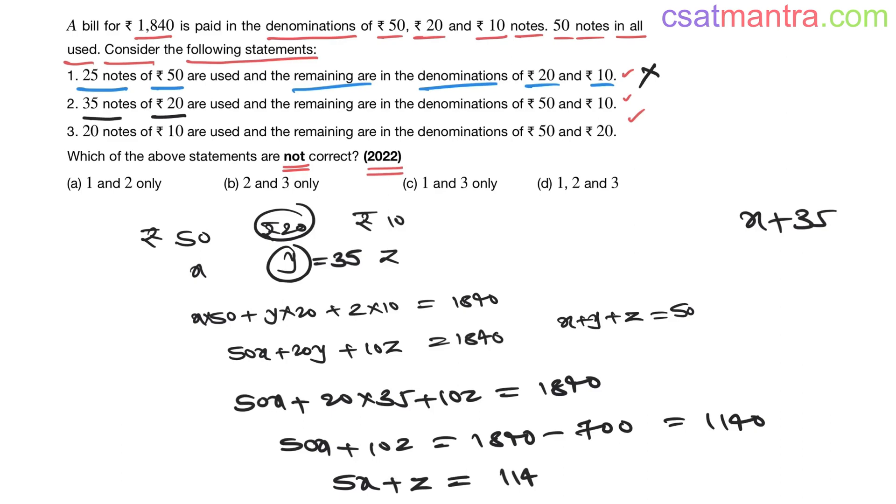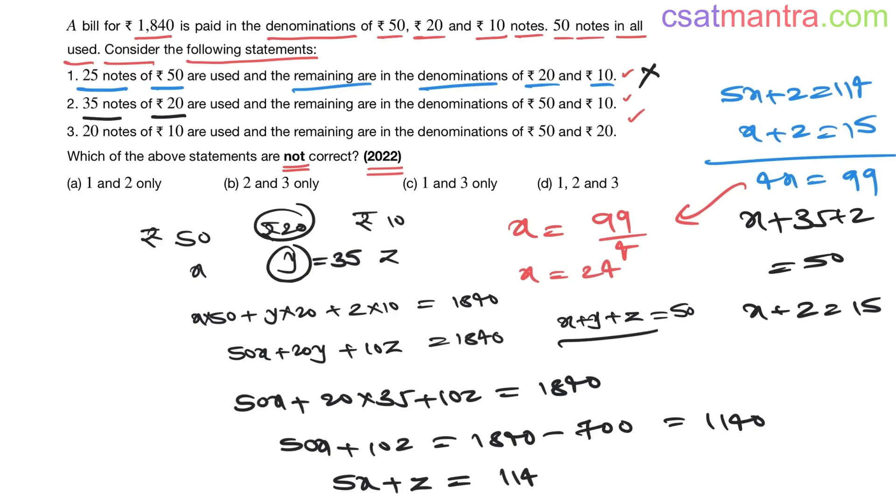Now x + y is 35, so x + 35 + z from this equation equals 50. So two equations: 5x + z = 114 and x + z = 15. Therefore 4x = 114 - 15 = 99, so x = 99/4.